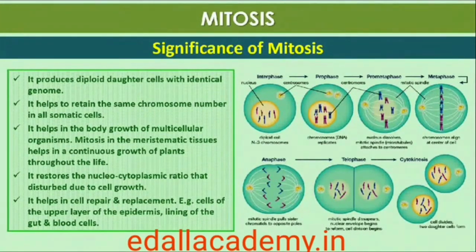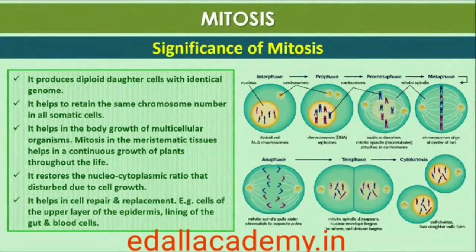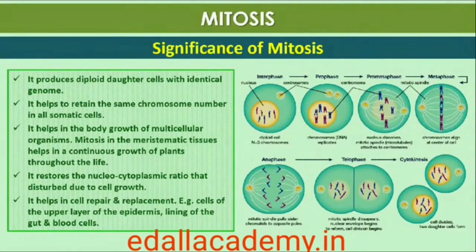Mitosis, or the equational division, is usually restricted to the diploid cells only; however, in some lower plants and in some social insects, haploid cells also divide by mitosis. Mitosis usually results in the production of diploid daughter cells with identical genetic complement. The growth of multicellular organisms is due to mitosis. Cell growth results in disturbing the ratio between the nucleus and the cytoplasm; it therefore becomes essential for the cell to divide to restore the nucleo-cytoplasmic ratio. A very significant contribution of mitosis is cell repair — cells of the upper layer of the epidermis, cells of the lining of the gut, and blood cells are being constantly replaced. Mitotic divisions in the meristematic tissues, the apical and the lateral cambium, result in a continuous growth of plants throughout their life.